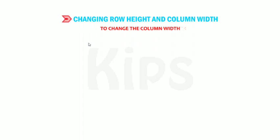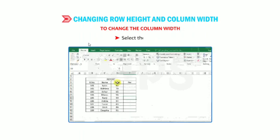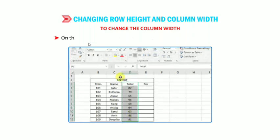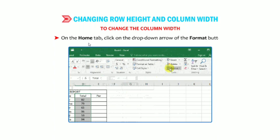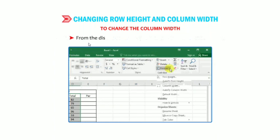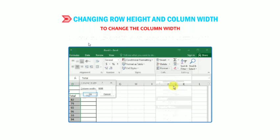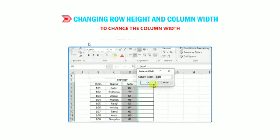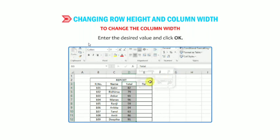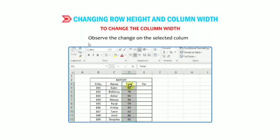To change the column width, select the column. On the Home tab, click the drop-down arrow of the Format button. From the displayed list of options, click on Column Width. The Column Width dialog box appears — enter the desired value and click OK. Observe the changes on the selected column.